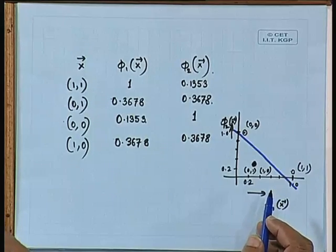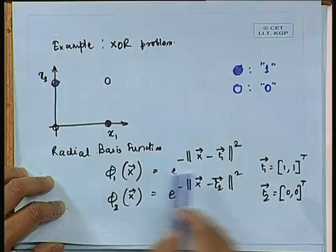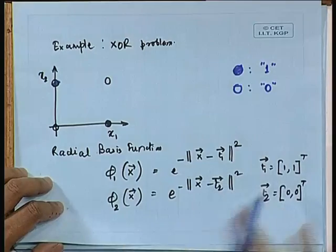This example shows that by simply doing a non-linear mapping using Gaussians as basis functions — mapping from x space to phi(x) space — we can find linear separability in the mapped space. The function we have designed demonstrates phi-separability, which we were discussing in the last class. This phi-separability is demonstrated by this XOR example.